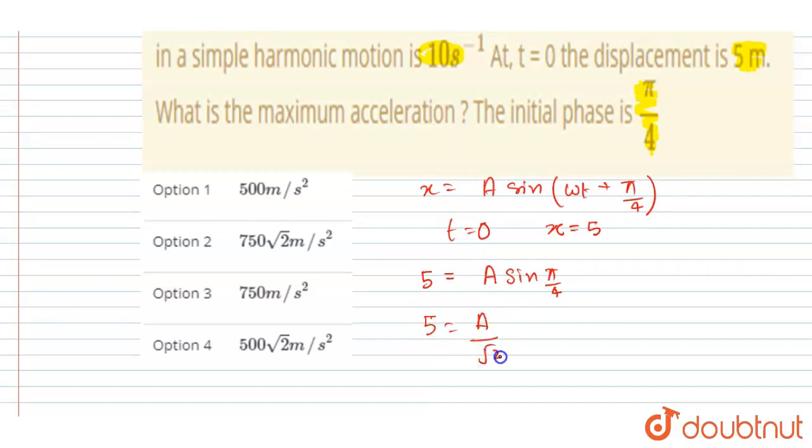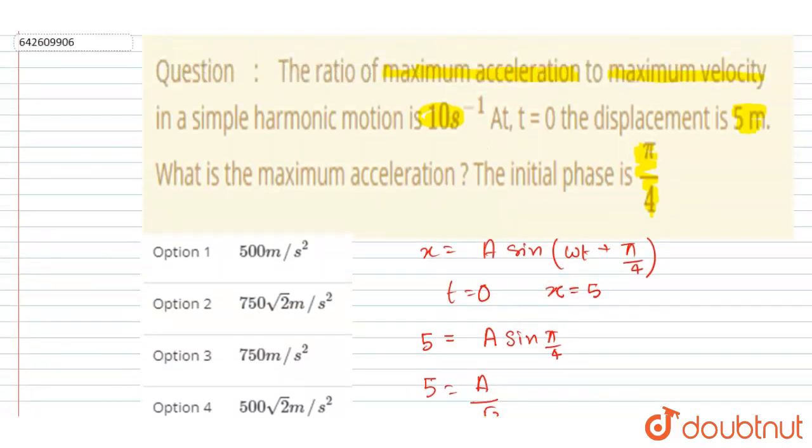...you will get A = 5√2. Now let us see the question again. It is given that maximum acceleration to maximum velocity ratio is 10 s⁻¹.